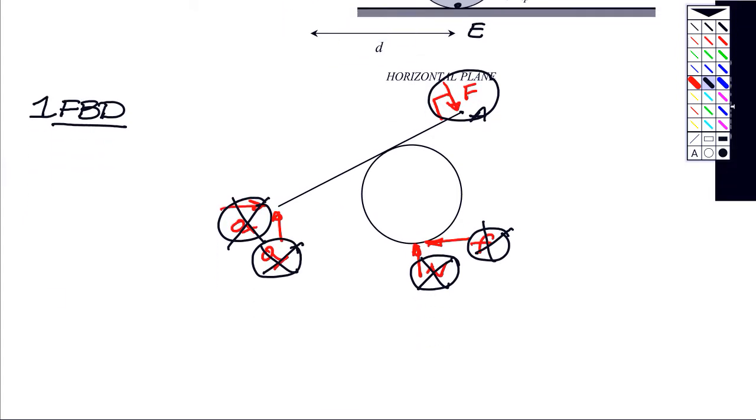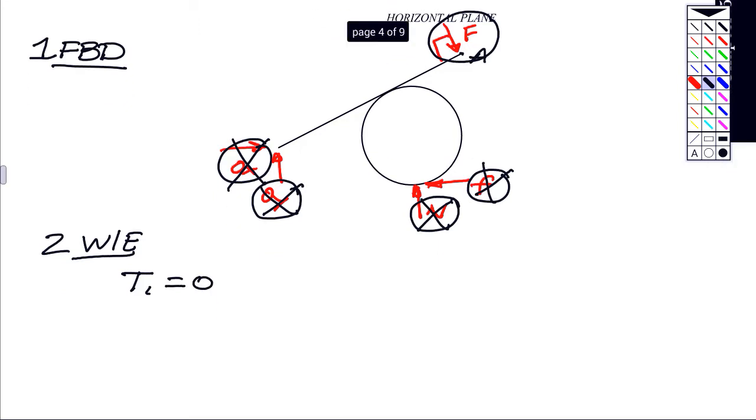So the work energy equation: the thing starts out from rest, so T1 is zero. The potential at both the beginning and the end states is zero because the problem is in the horizontal plane.